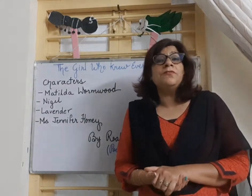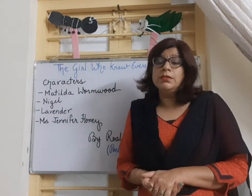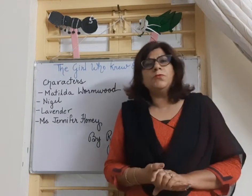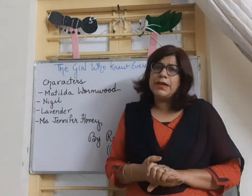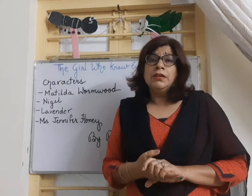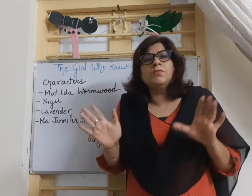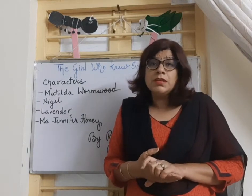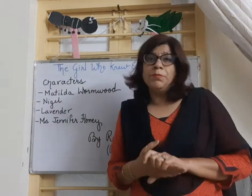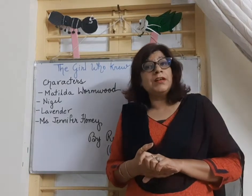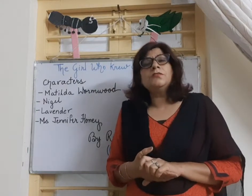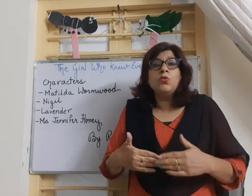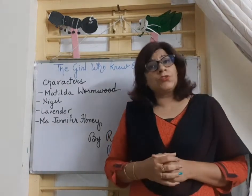This story is about a five-and-a-half year old girl called Matilda Wormwood. Matilda Wormwood is a very intelligent, very bright girl. She has read all the books in the local library and she can add up numbers as fast as computers. Mrs. Jennifer Honey, the teacher, is very excited to meet and test this girl and know more about her strengths.